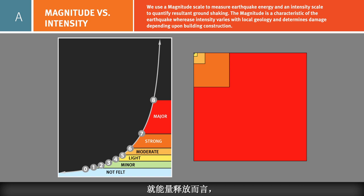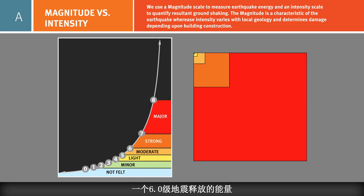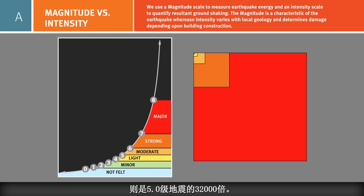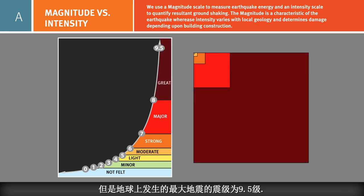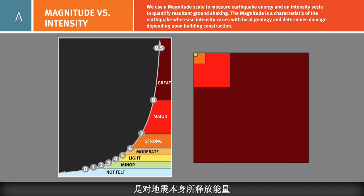In terms of energy, the increase is even greater, with each step in magnitude having approximately 32 times the energy of the previous. A magnitude 6 releases about 32 times the energy of a magnitude 5, and a magnitude 8 releases around 32,000 times the energy of a magnitude 5. There is no upper limit on magnitude; however, the largest recorded earthquake in history was a magnitude 9.5. Earthquake magnitude does not vary from place to place, but is a characteristic of the total energy released by a particular earthquake.